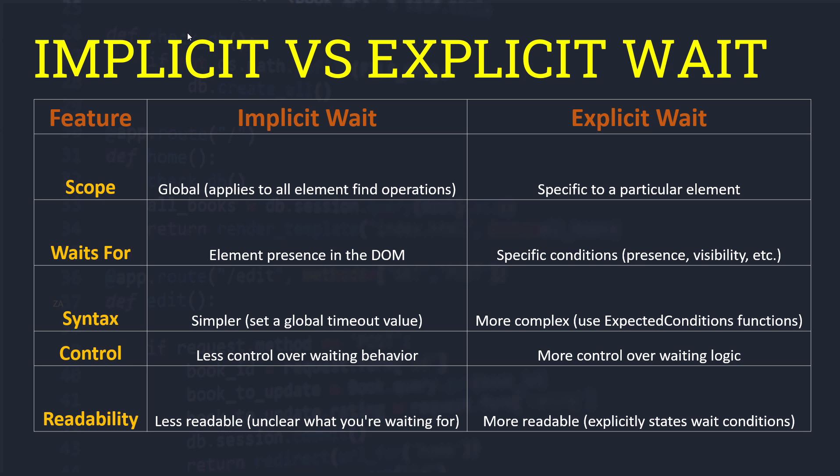In the explicit wait we need to provide the expected conditions, so that's why it's a bit more complex in syntax. When we talk about control, we have less control over the waiting behavior with implicit wait because we define it at the driver level as global, whereas we have more control over the waiting logic in the explicit wait because we are giving specific conditions. The implicit wait is also less readable because we don't know what it is waiting for.